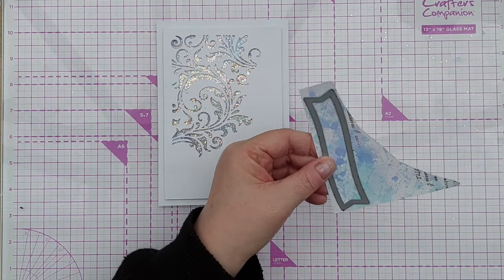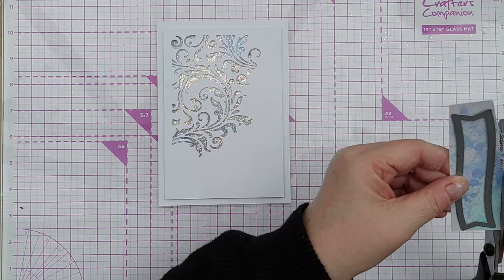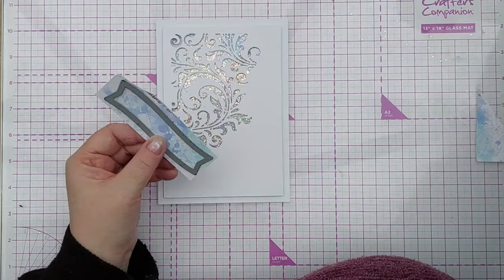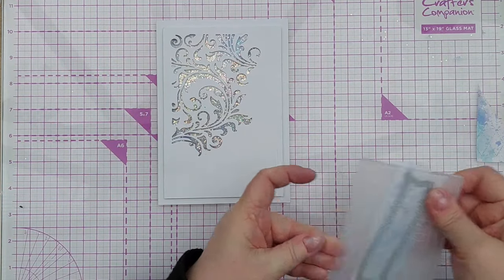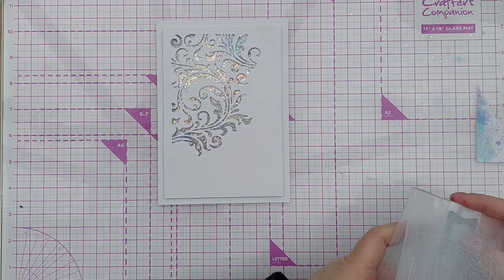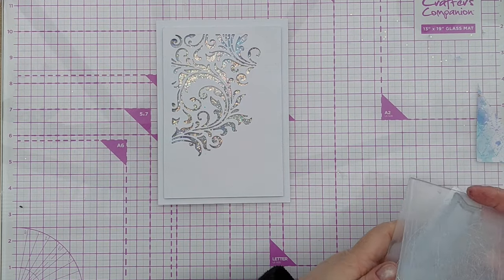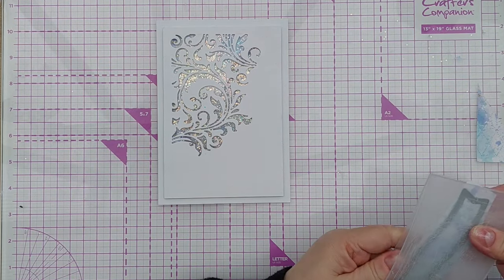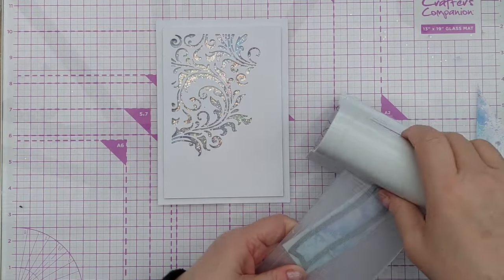After sticking my card panel down to my card blank, I set about creating the embellishments for the front of the card. Firstly, I made a curvy banner using a stitched banner die and the leftover bit of mixed media.